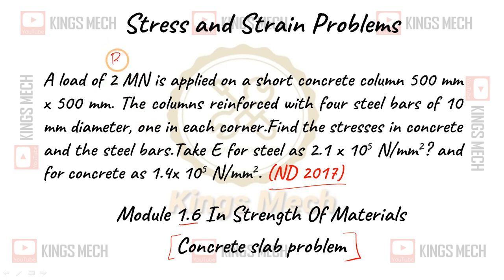A load of 2 MN, capital P which is equal to 2 times 10 power 6 N, is applied on a short concrete column of width 500 by 500. So concrete area which is equal to 500 into 500 which means 250000 mm square.